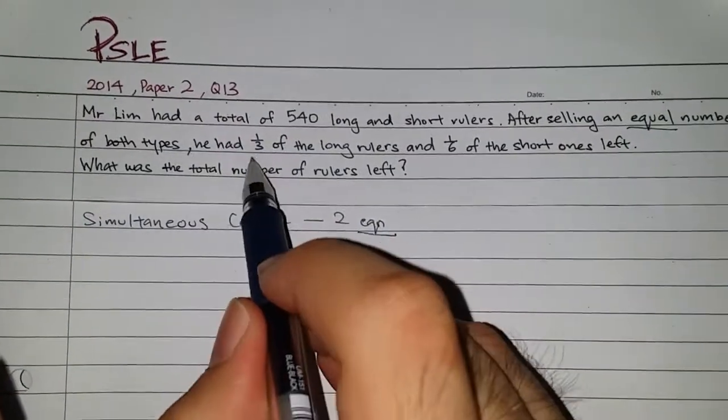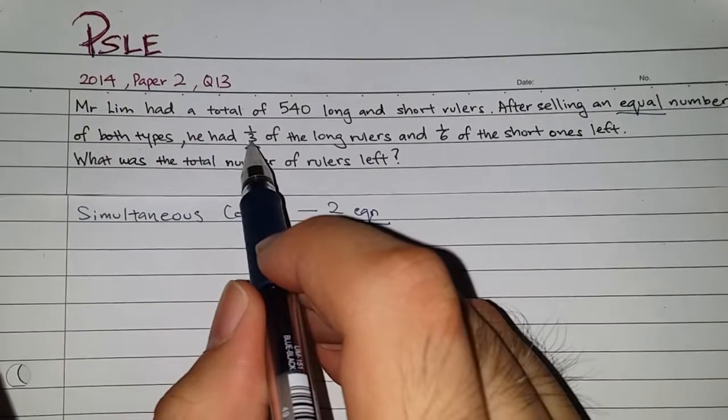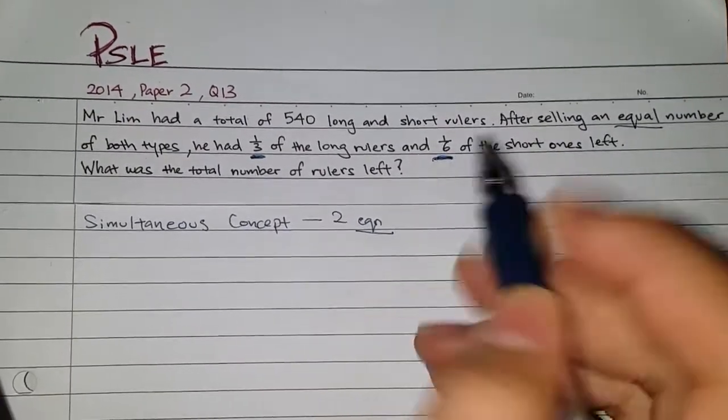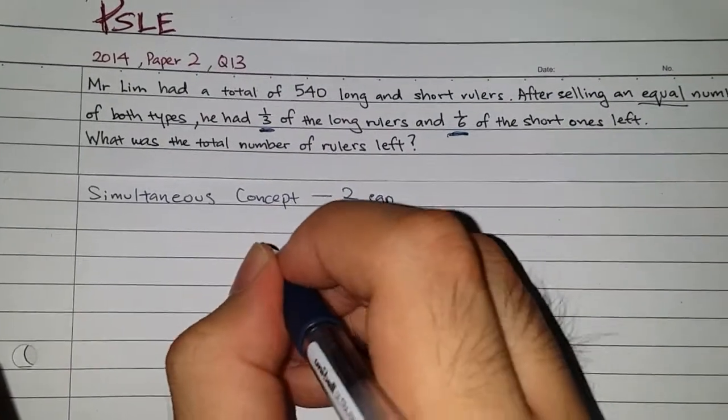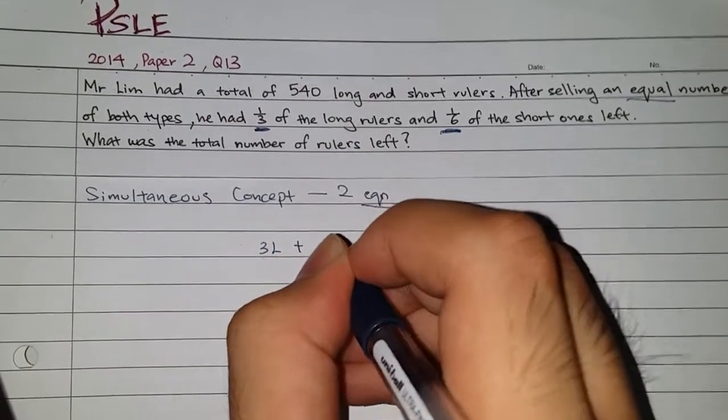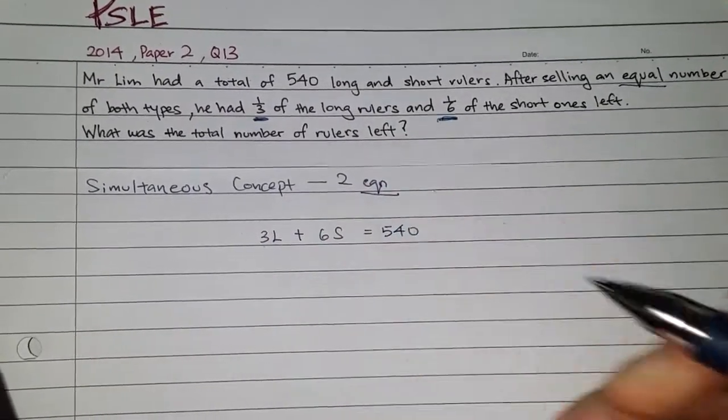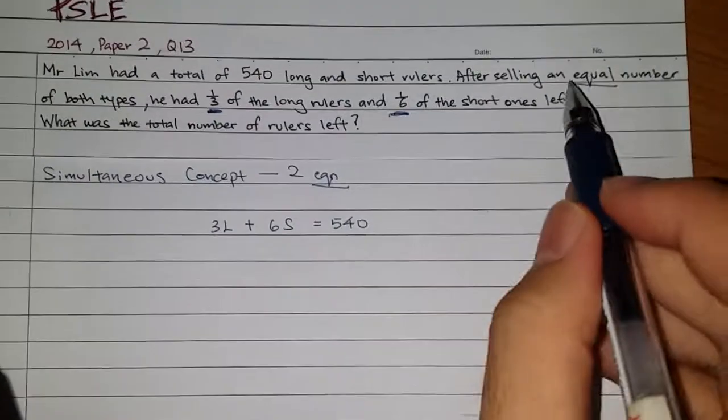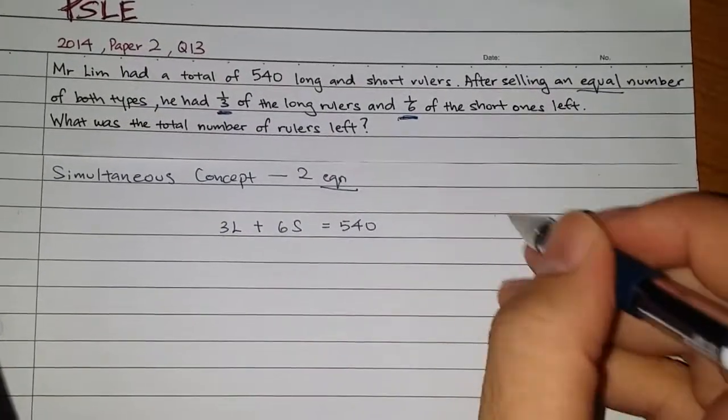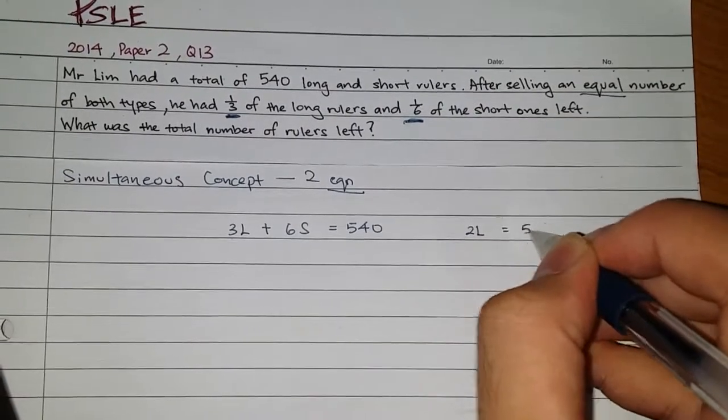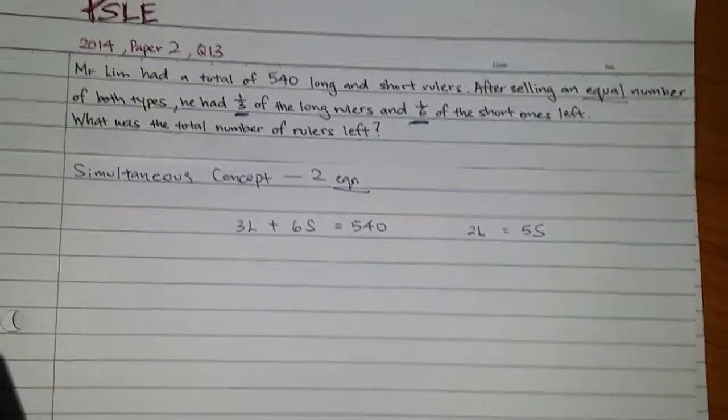From here, we need to be able to come up with a few equations to solve. So for simultaneous, you usually need to come up with two equations and then you can solve them. So how do we do this question? Is that the long, there are three units based on the fraction. And for the short, there are six units for the total. So over here, I'm going to do 3L plus 6S is equals to 540. This is my first equation. My second equation is selling equal numbers of both types, which means that 2L is equals to 5S, which we have explained it earlier.